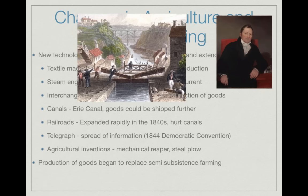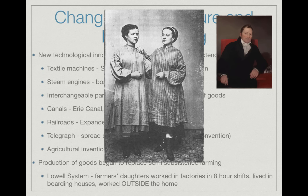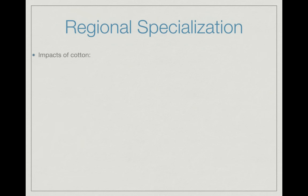Agricultural inventions included the mechanical reaper, which harvested crops, and the steel plow, which broke soil to grow more crops. Production of goods began to replace semi-subsistence farming, and more people moved from farms to factories or at least began creating things outside the home. We see this in the Lowell System — farmers' daughters worked in factories on eight-hour shifts and lived in boarding houses.